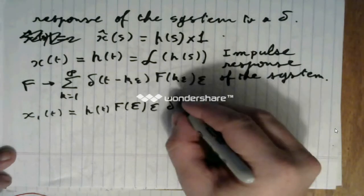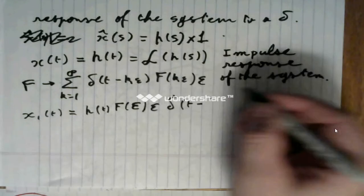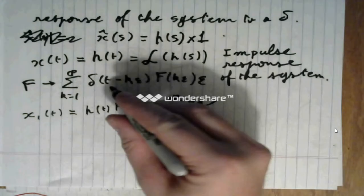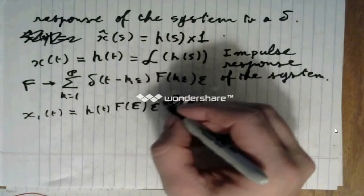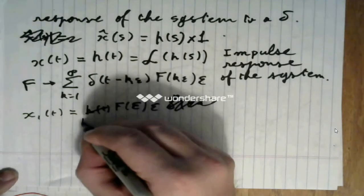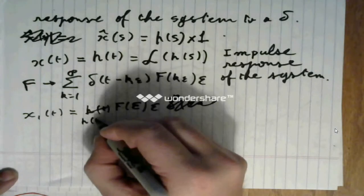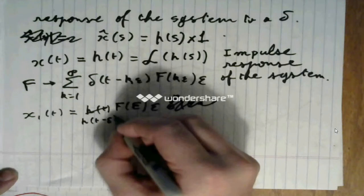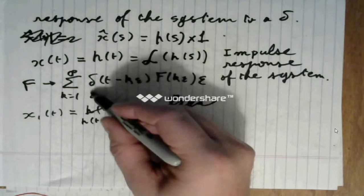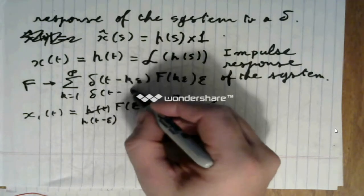And since it is the response to a slightly delayed delta of t minus k epsilon, the response will be not h of t but h of t minus epsilon. So, it will be a delayed response to delta of t minus epsilon.